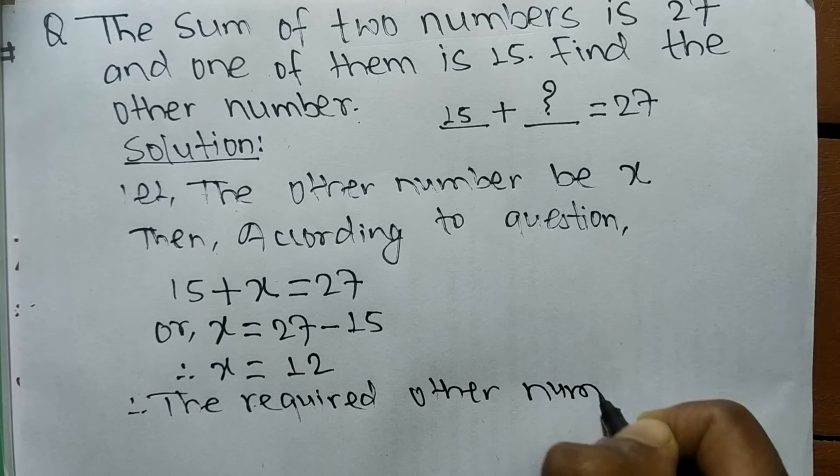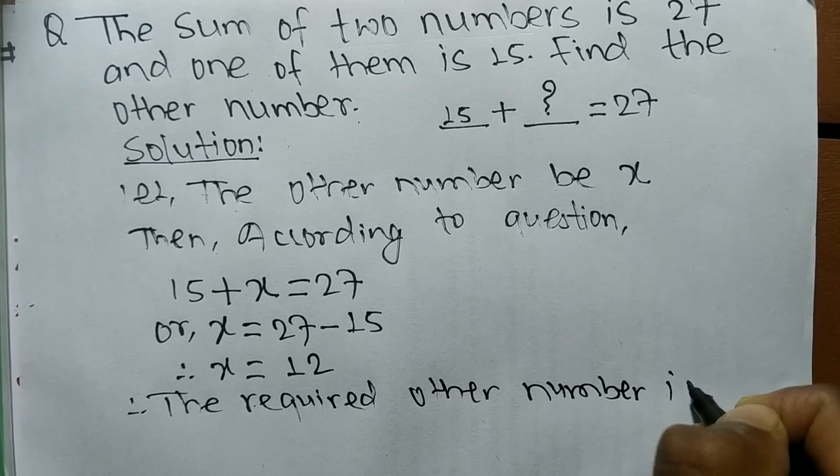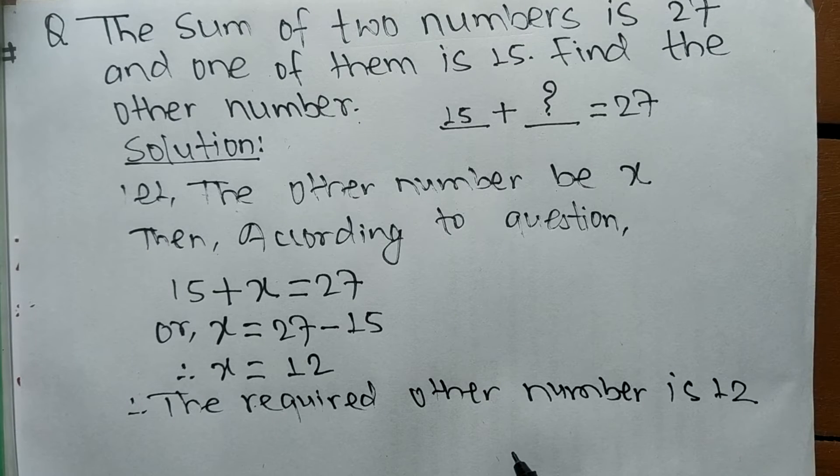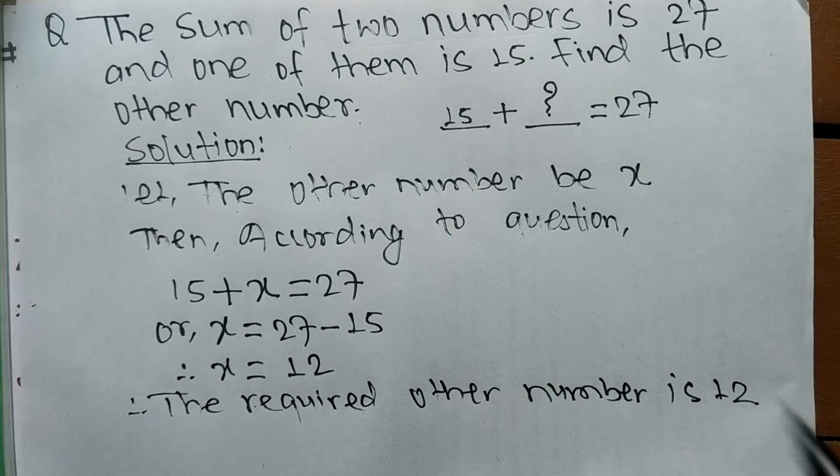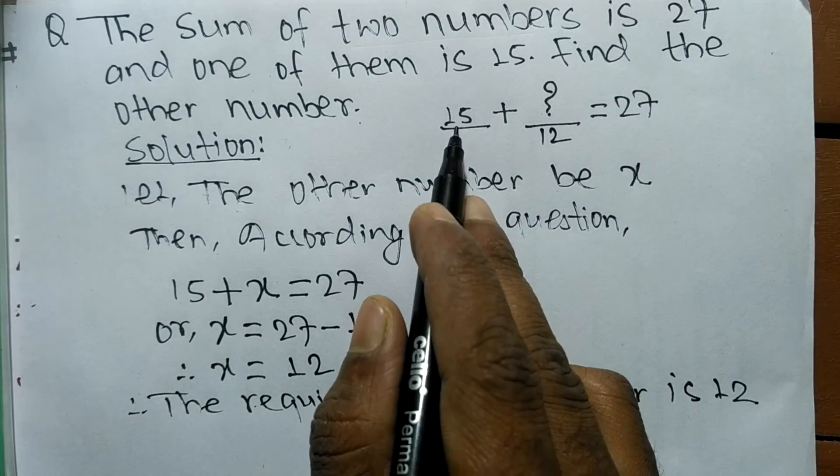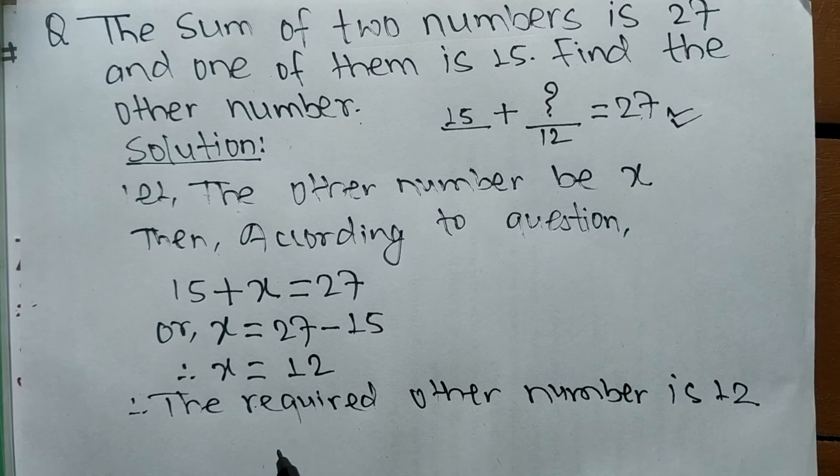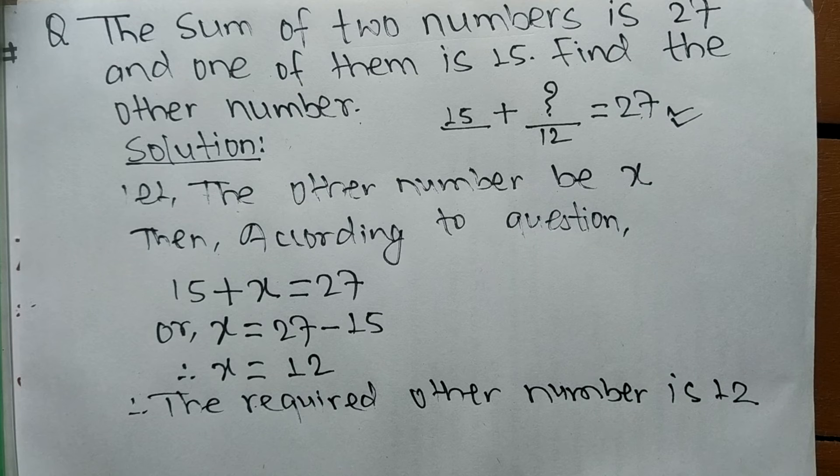The required other number is 12. When we put 12 here, 15 plus 12 equals 27. So the required other number is 12.